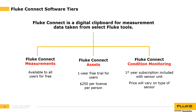The Fluke Connect software comes in three different tiers. The first, or bottom tier, is the Fluke Connect measurements tier — available to all users for free, enabling them to capture measurements and save data to the cloud. The second, or middle tier, is the Fluke Connect assets tier, which comes with a one-year free trial and is $250 per license per person after that. It includes all measurements-tier features plus asset management, asset health tracking, and work order management.